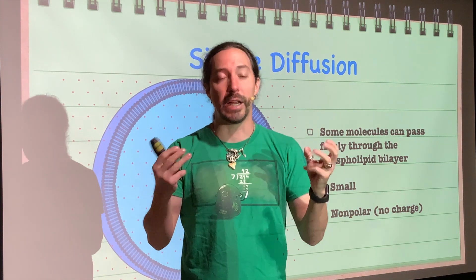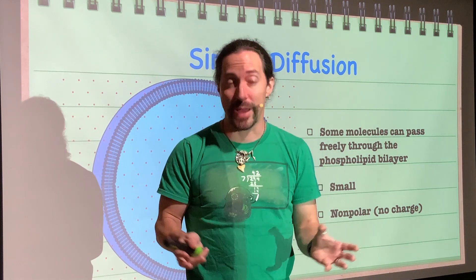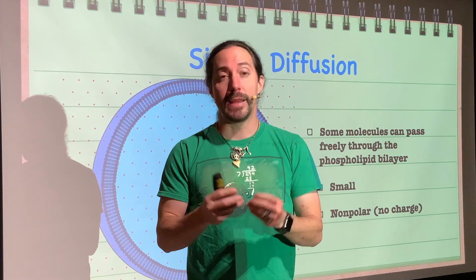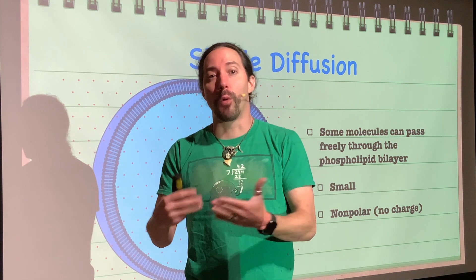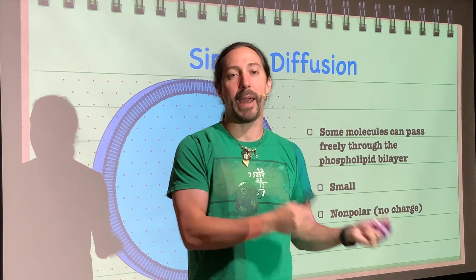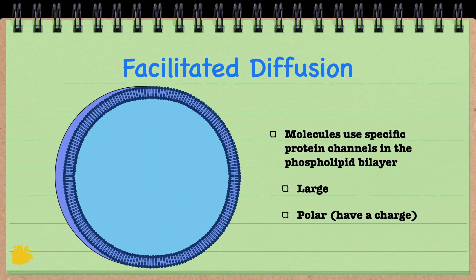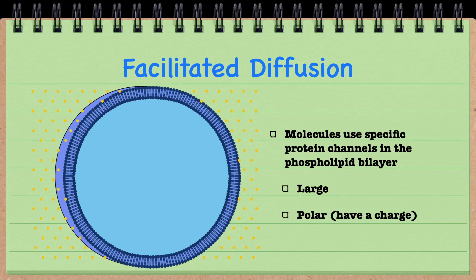By 'large' I don't mean hundreds of atoms — even five or six atoms is starting to get very large in this context. A molecule of glucose, for example, is 24 atoms in size and is considered a very large molecule — it cannot just pass through the phospholipid bilayer. So large molecules and polar or charged molecules cannot pass through on their own; they can't get into the cell without help.